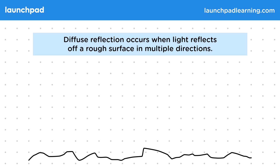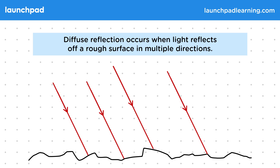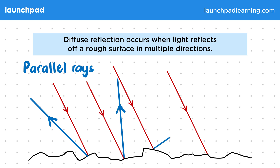Here's an example of a diffuse surface — it's very bumpy and uneven. Let's imagine we have these four rays of light directed at the surface. Importantly, these rays are all parallel before they reflect. However, after reflecting, the rays will be pointing in all different directions. This means the light is reflecting diffusely.